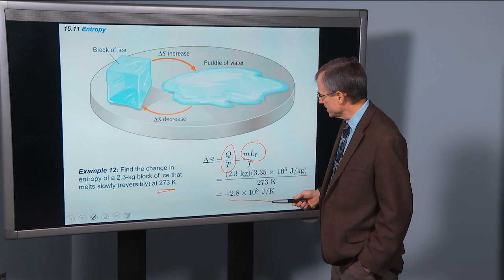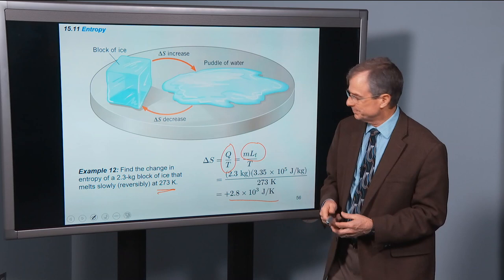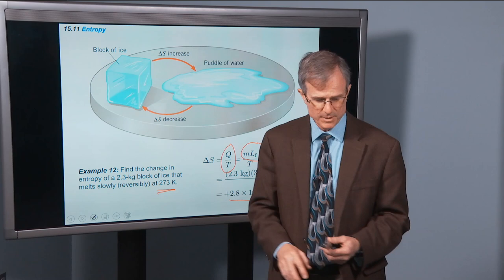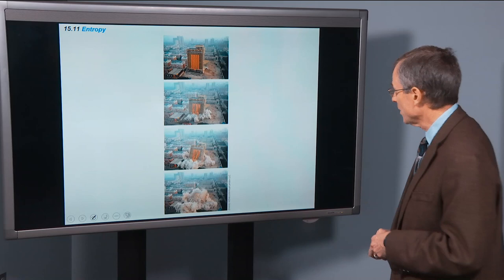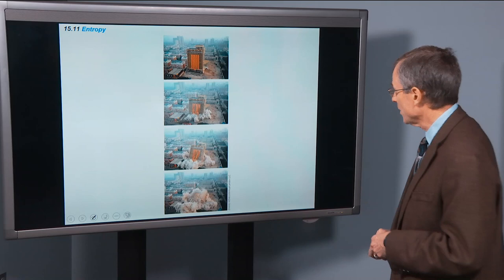Now, since it's a reversible process, if you capture all that energy, then you can reverse that process and change the entropy back this other way. Here's a very catastrophic example of the law of increase of entropy, going from an ordered state, like that block of ice, to a very disordered state, the building blowing up.